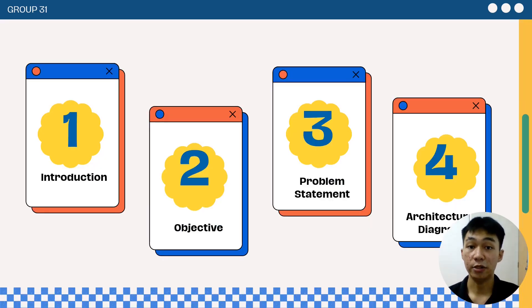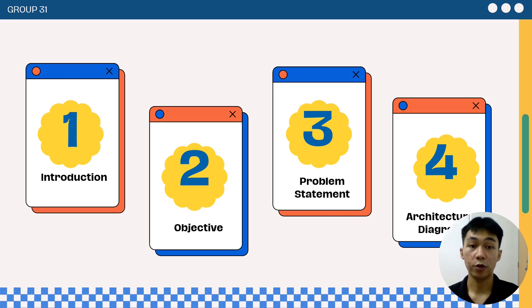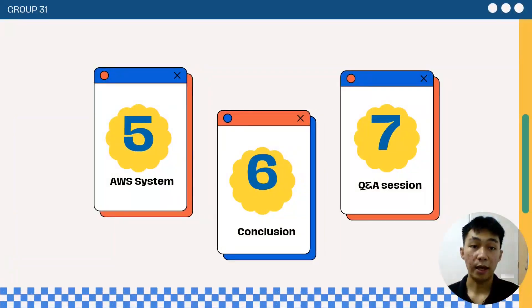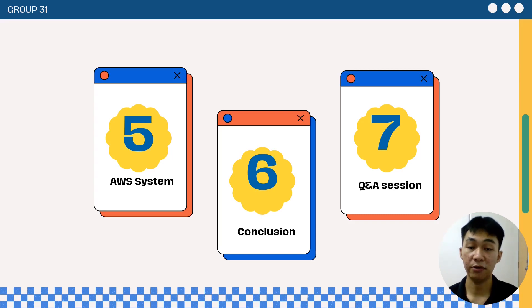The components that we will cover in our presentation are Introduction, Objectives, Problem Statement, Architecture Diagram, AWS System, Conclusions, and also a Q&A section.